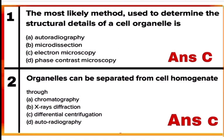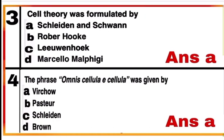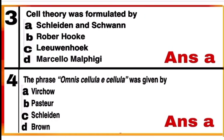Question 2: Organelles can be separated from cell homogenate through option C, differential centrifugation. The basic principle involved here is sedimentation of particles by centrifugal force, which helps in separating organelles from cell homogenate.